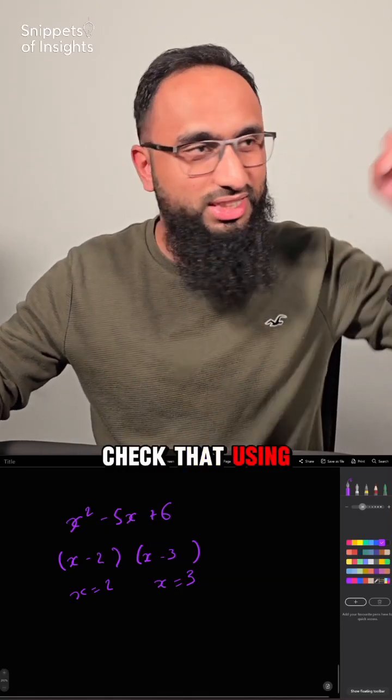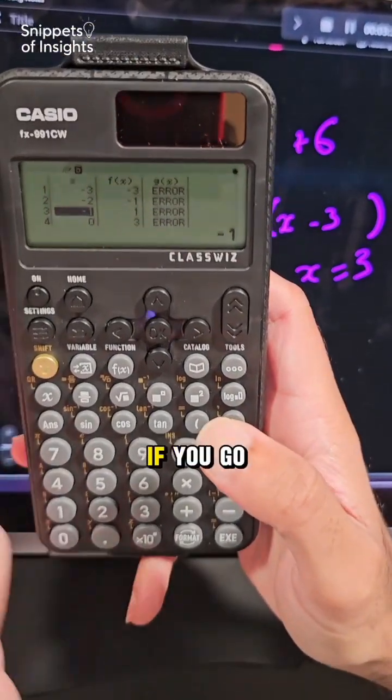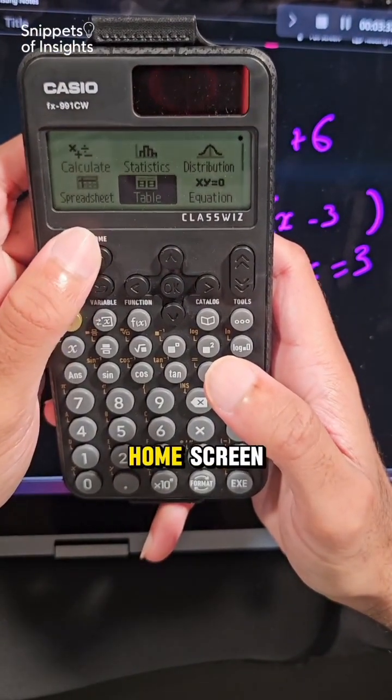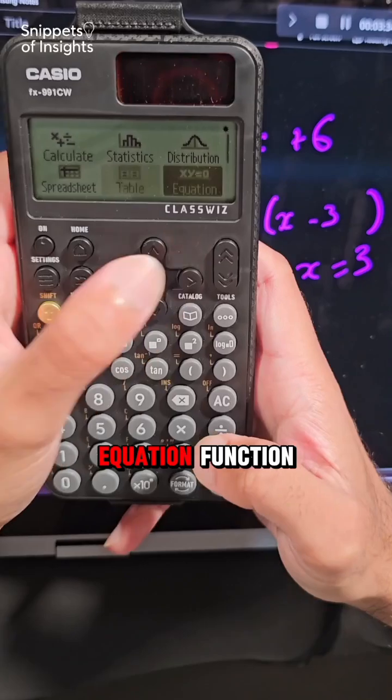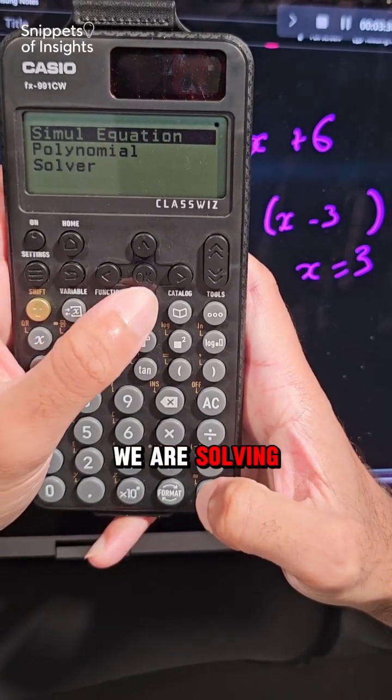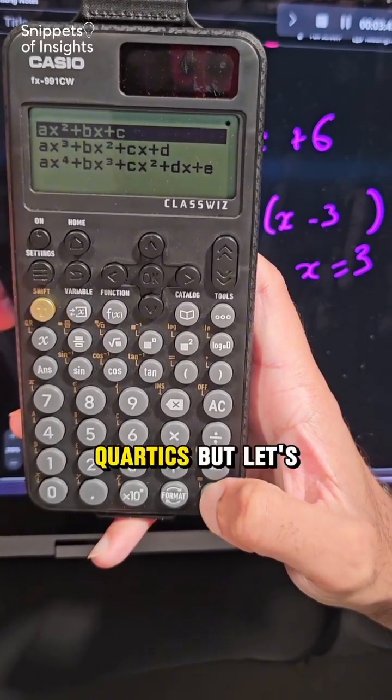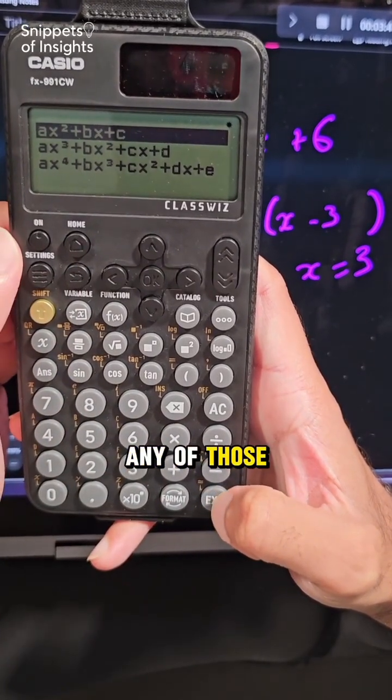Now let's double check that using the calculator. If you go back to the home screen, we've got the equation function. So we click on equation and right now we are solving a polynomial. All it means is we've got quadratics, cubics, quartics, but let's not worry about any of those.